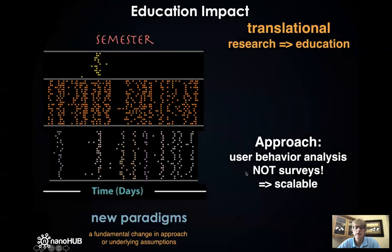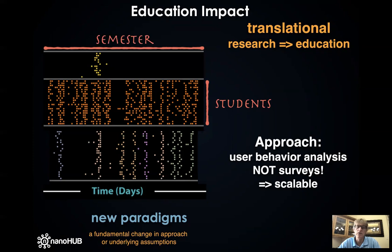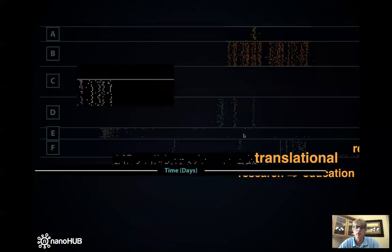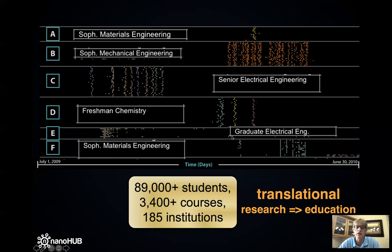We developed algorithms that cluster similar people's behavior across time. Here you see a group of people that use the yellow tool; here's a group that comes in a rhythmic pattern; here is spring break in the middle; and other classes use multiple tools. What you can really measure is the number of students in a classroom over a semester. This is behavior analysis — not a survey of what people are doing, but really measuring impact by quantitative behavioral metrics. We've identified over 89,000 students clustered like this over the years.